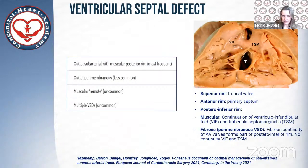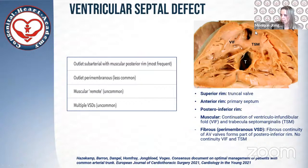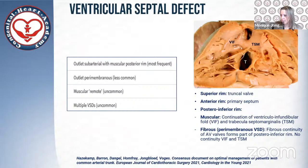The VSD is usually an outlet subarterial VSD with a muscular posterior rim. The superior rim is the truncal valve. Anteriorly the VSD is bordered by the primary part of the ventricular septum. The posterior rim can either be muscular — most common, being a continuation of the ventricular infundibulum folds towards the trabecular septum marginalis — or fibrous in a less common form, in which case it is a perimembranous VSD with fibrous continuity of the atrioventricular valves forming part of the posterior inferior rim.